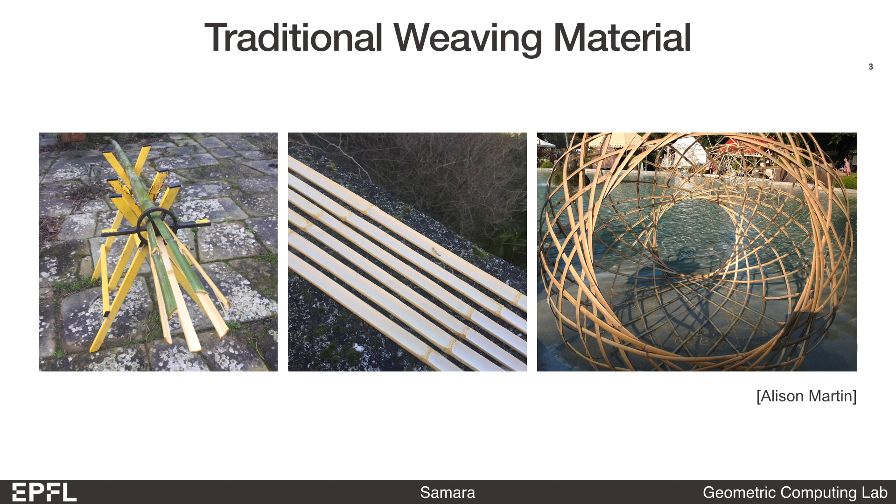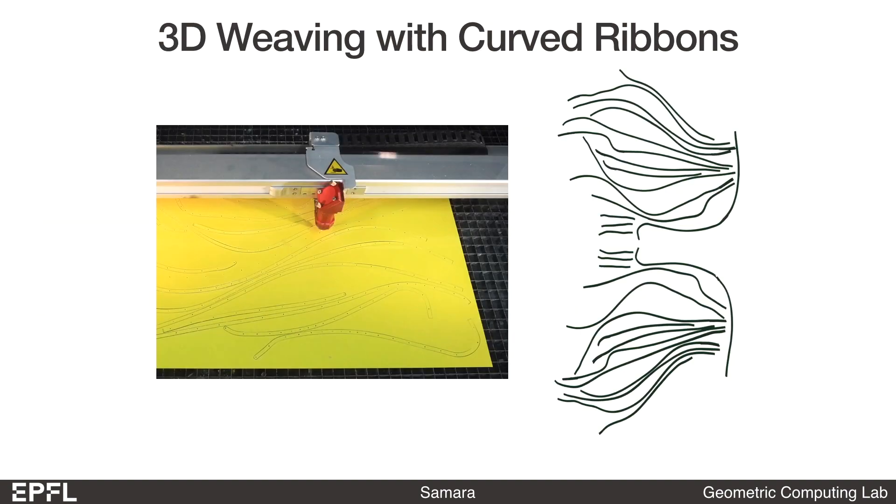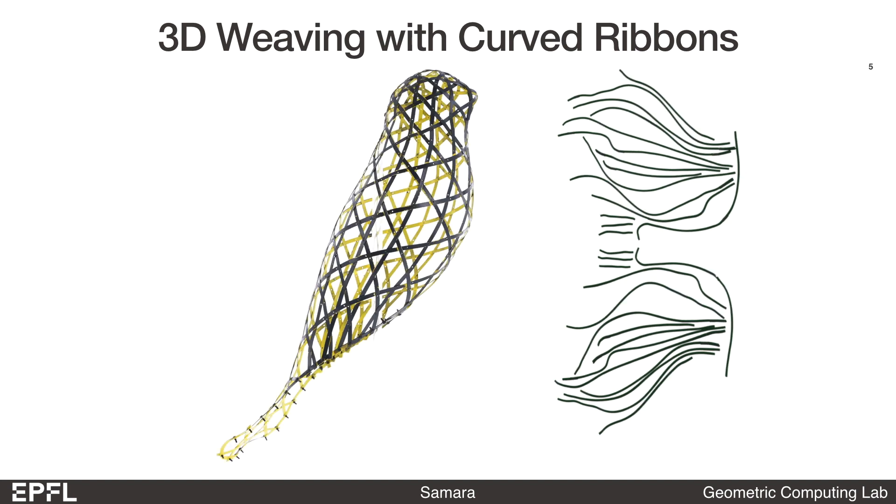These materials can be easily cut into straight ribbons that align with the material's fiber directions. However, with modern fabrication technology such as laser cutting, we can fabricate ribbons of arbitrary shapes. In this case, if we fabricate a set of planar ribbons shown on the right, we can weave them together. This is one of the example outputs of our framework.